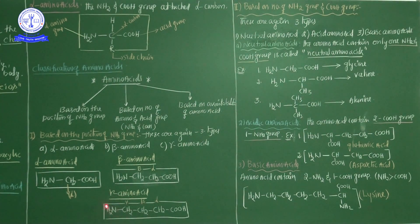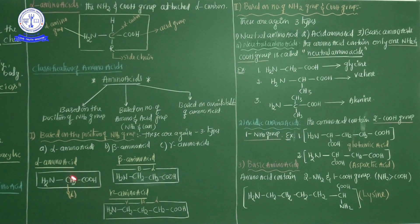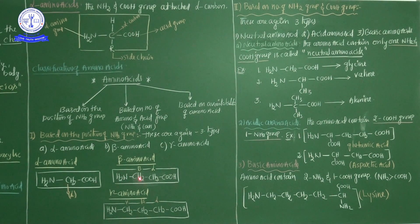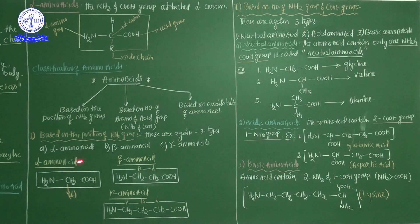This classification is based on the position of the NH2 group. In the first example, the NH2 group directly attaches to the alpha carbon — alpha amino acid. In the second, NH2 attaches to the beta carbon — beta amino acid. In the third, NH2 attaches to the gamma carbon — gamma amino acid. Three different types of amino acids based on the position of the NH2 group.